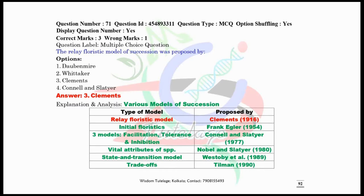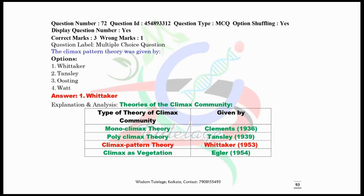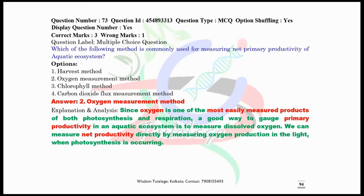In this episode we have started from question number 71. The relay floristic model of succession was proposed by Clements. I have given here the entire list of various models of succession proposed by various ecologists along with their respective years. Now question number 72, the climax pattern theory was given by Whittaker. You have to remember the other climax community theories.